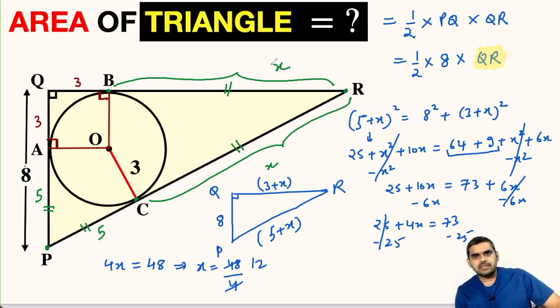So we found the value of x as 12. Now QR is 3 plus 12, so this will be 15.